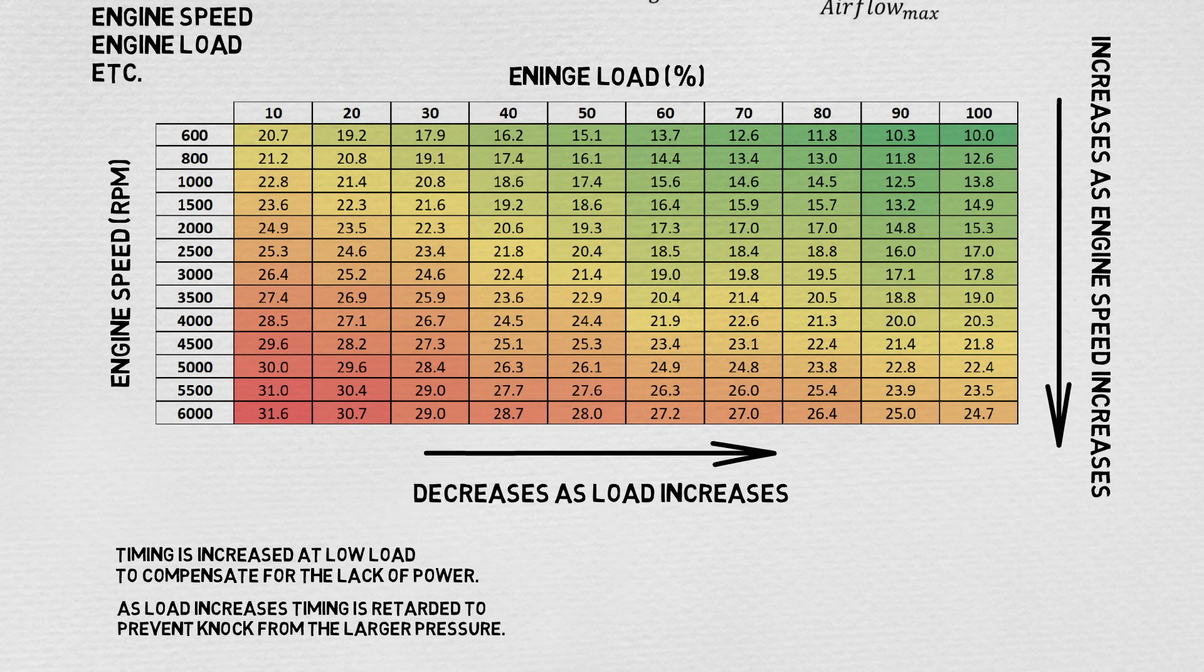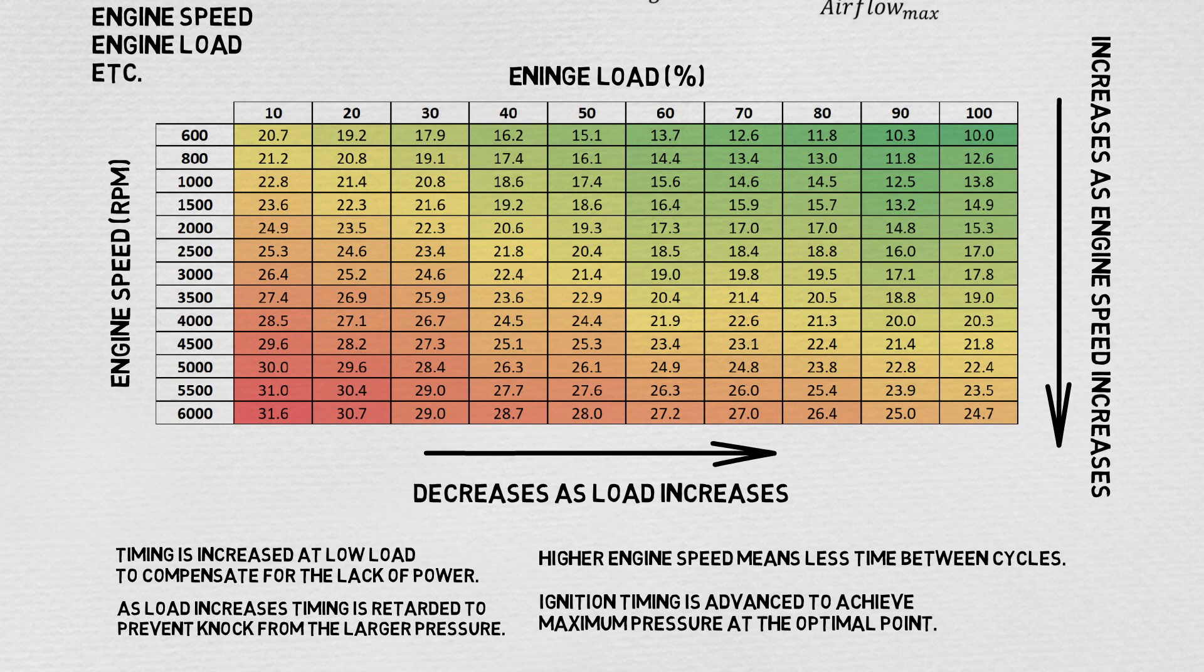Next, assuming a constant air fuel ratio, a higher engine speed means the flame expansion speed is the same, but there is less time between cycles. Therefore, ignition timing must be advanced to achieve maximum pressure at the optimal point.